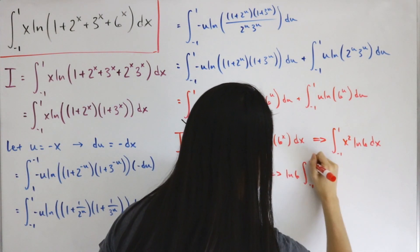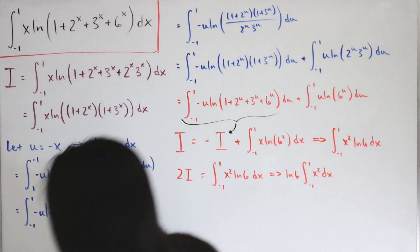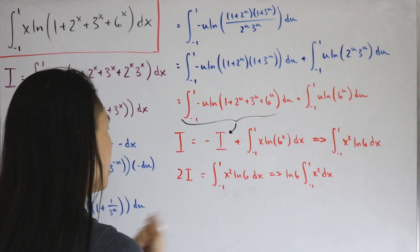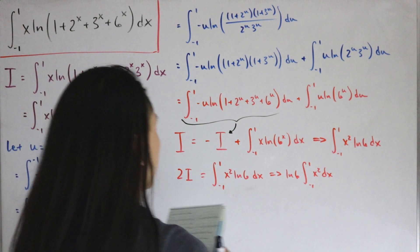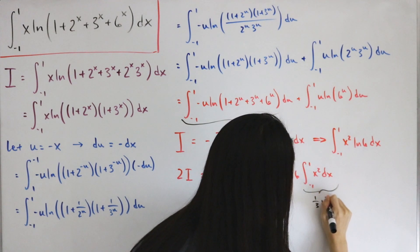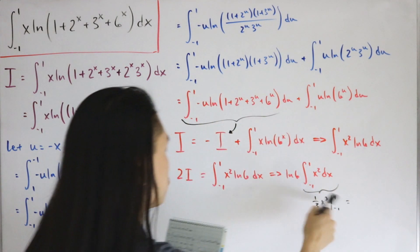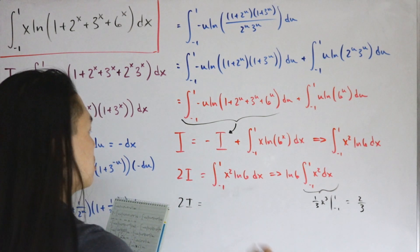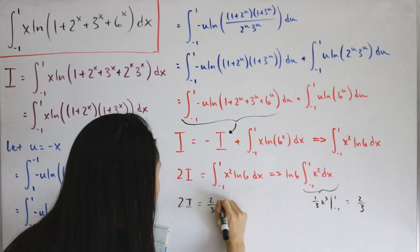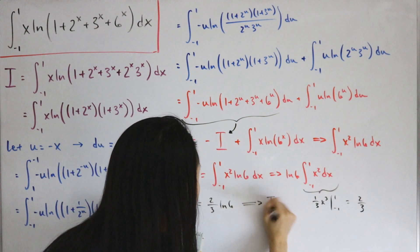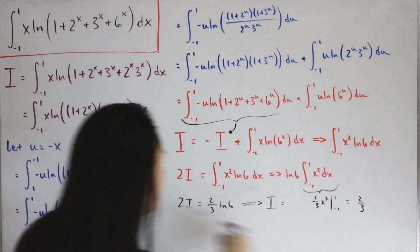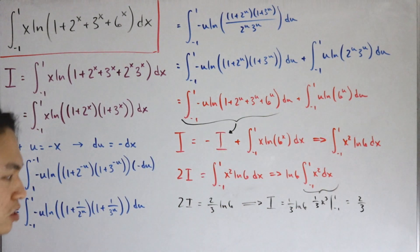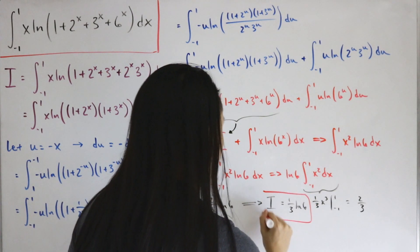Since ln(6) is a constant, we factor it outside the integral. The integral from -1 to 1 of x² dx equals [x³/3] from -1 to 1, which gives 1/3 - (-1/3) = 2/3. So 2I = ln(6) · (2/3), meaning capital I = (1/3) · ln(6). That is our final answer.